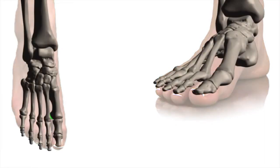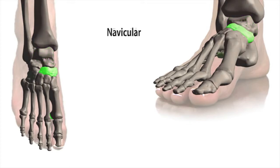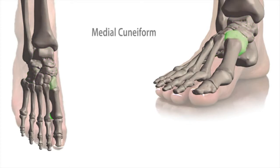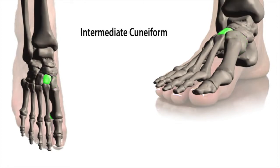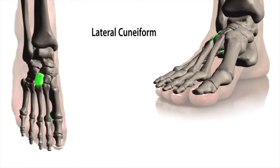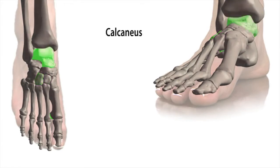First we will look at the tarsal bones. There are a total of seven bones in this section of the foot. They consist of the following: talus, navicular, cuboid, three cuneiforms including the medial cuneiform, intermediate cuneiform and the lateral cuneiform. The largest of the tarsal bones is the calcaneus.